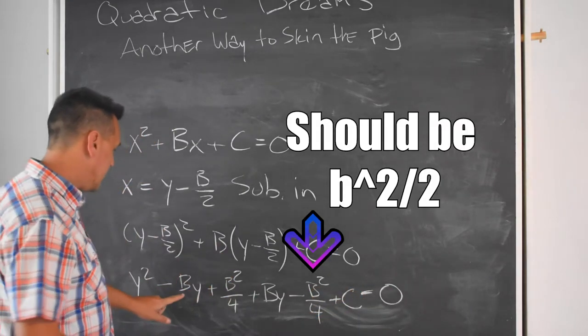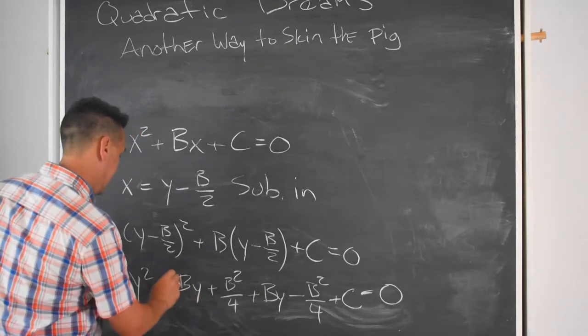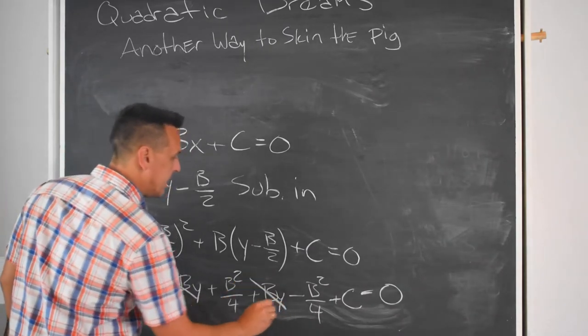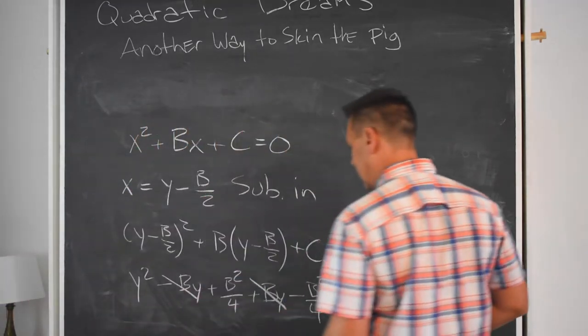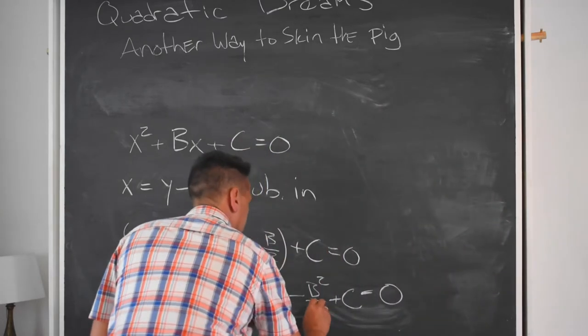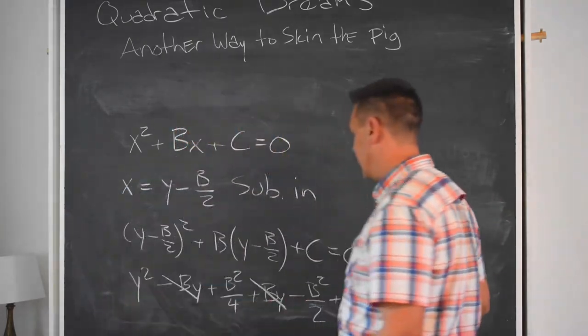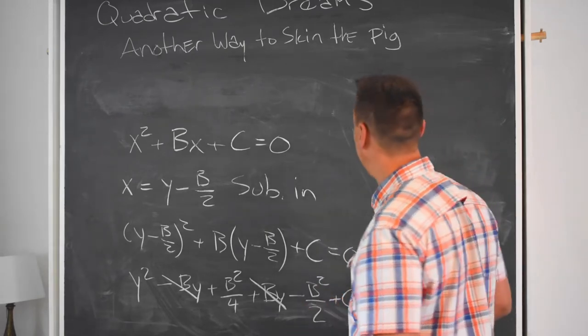And now I'm going to have to do some boiling. And notice, lo and behold, I've got a minus by and a plus by. Those terms go away. And to write things a little bit nicely up here. Oh whoops, I'm sorry. This should be b squared over 2, not b squared over 4. Otherwise, everything goes away. And I guess things get way easier then.